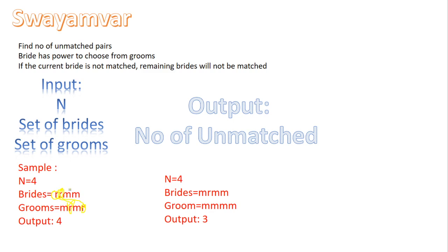Moving on to the next bride, she also gets matched. So we have got four pairs in total. Since the question asks for unmatched pairs, the answer is zero — there are no unmatched pairs in this case, so the output should be zero.